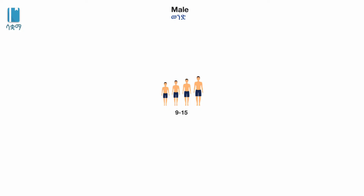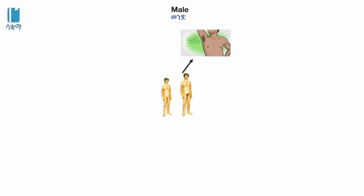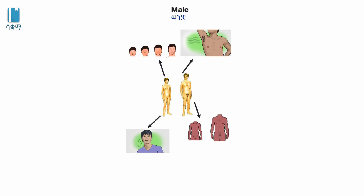Secondary sexual characteristics in males include: growth in height and becoming taller, growth of pubic hair, body hair, and facial hair, broadening of the shoulders and chest.